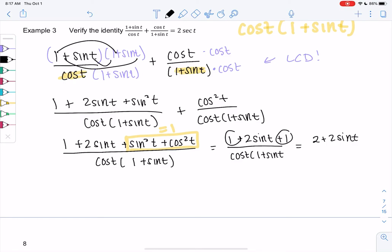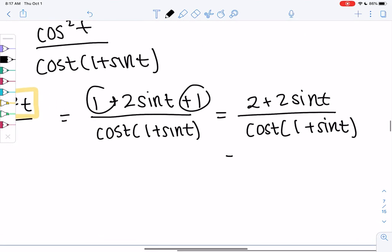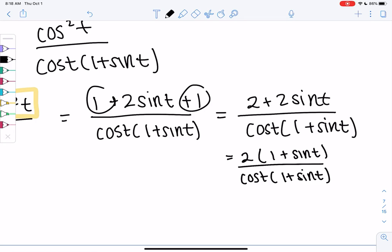And then we can combine those to make two, right? One and one. It might look like we're not doing anything, but we are making progress. It looks messy, but it is better than what we started with. I noticed I could maybe factor out the two on top. So two and then we get one plus sine t. That looks promising because that matches something in the denominator.